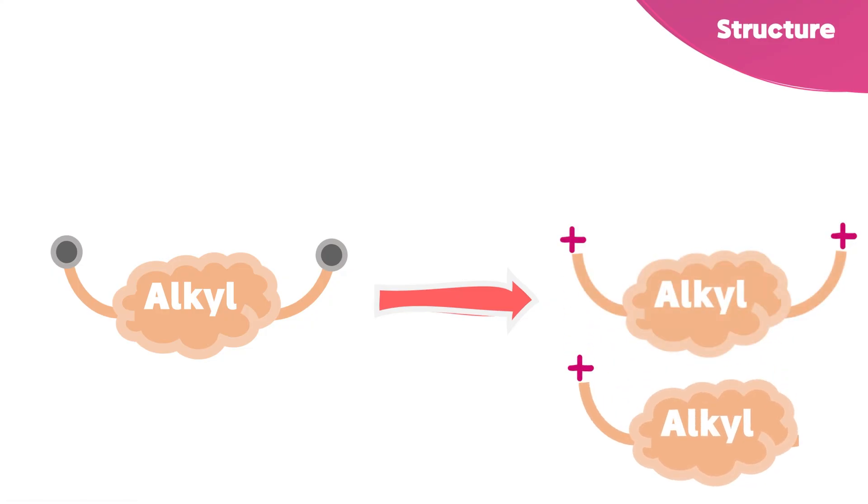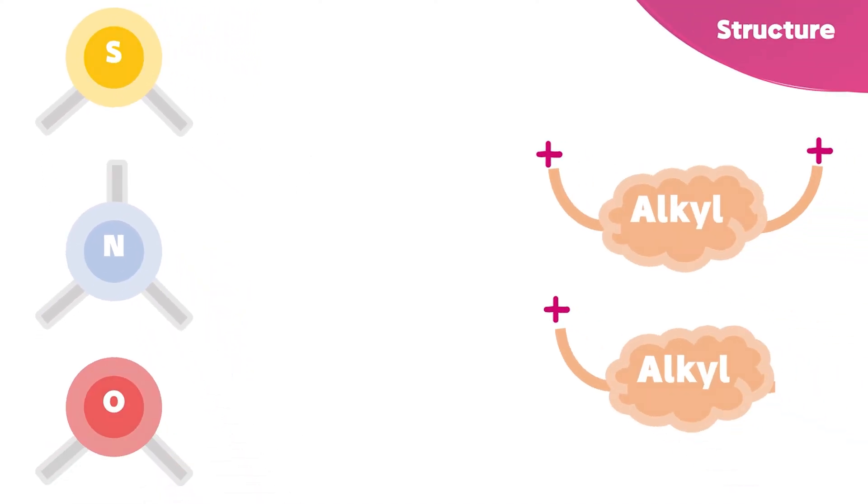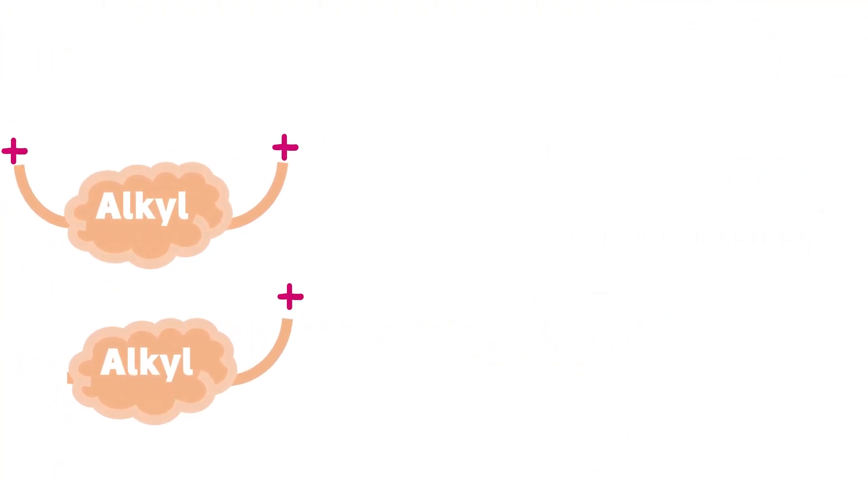They can be bifunctional or monofunctional. The alkyl group can bind to an oxygen, nitrogen or sulfur atom, because most often these atoms have partial negative charges. Now let's investigate what are the mechanisms of action of an alkylating agent within the cell.